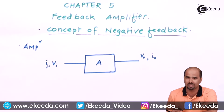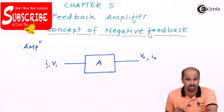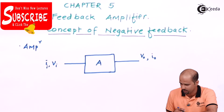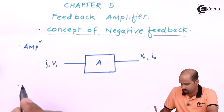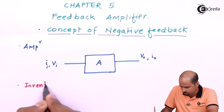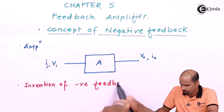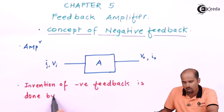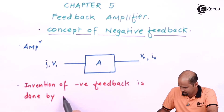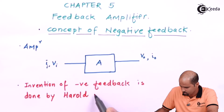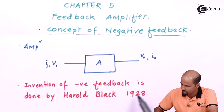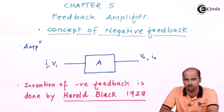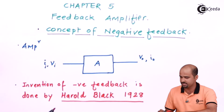Now we have to learn what feedback is, how it affects amplifier operation, and why we need a feedback amplifier. The feedback concept was invented in 1928 by Harold Black — that is not critical for exams but useful as extra knowledge.